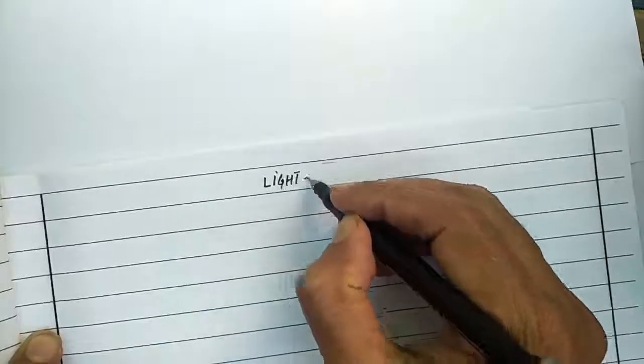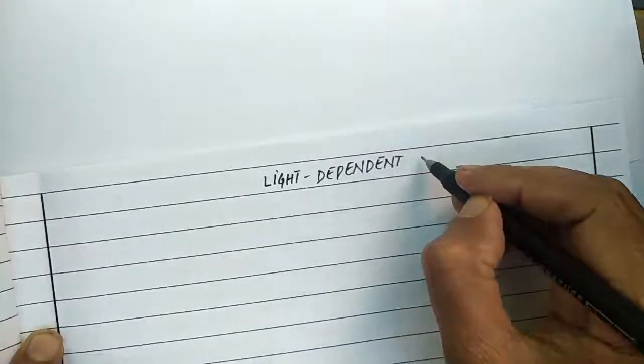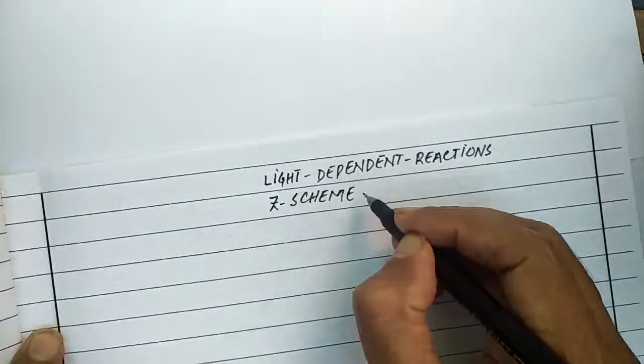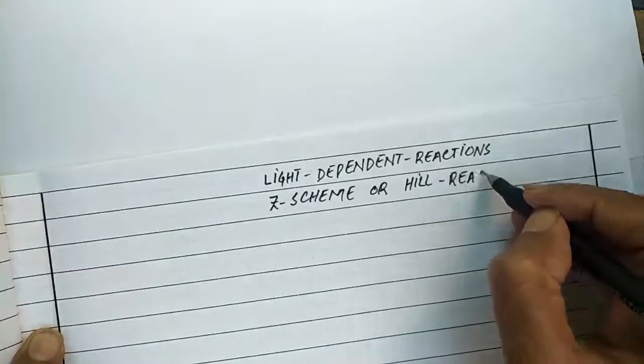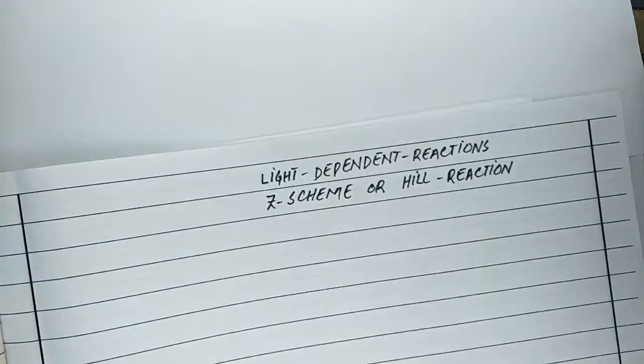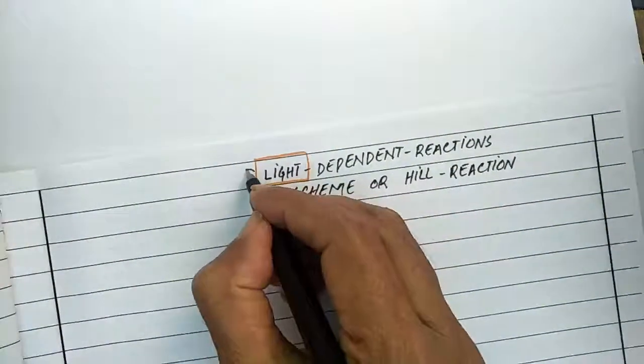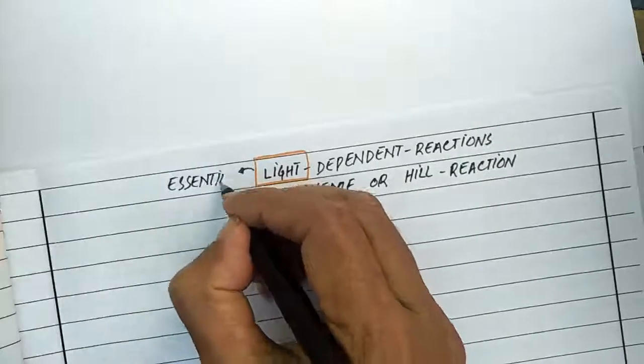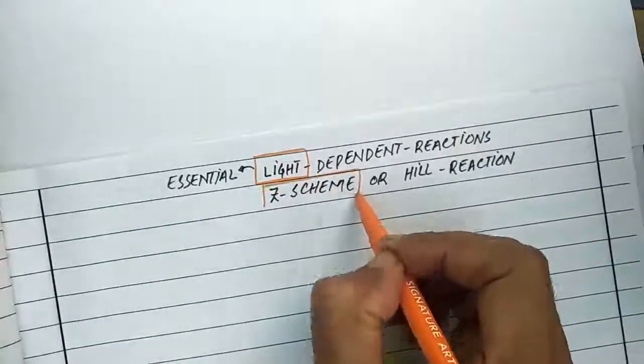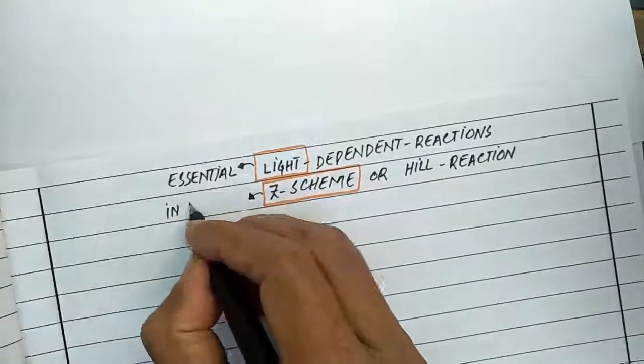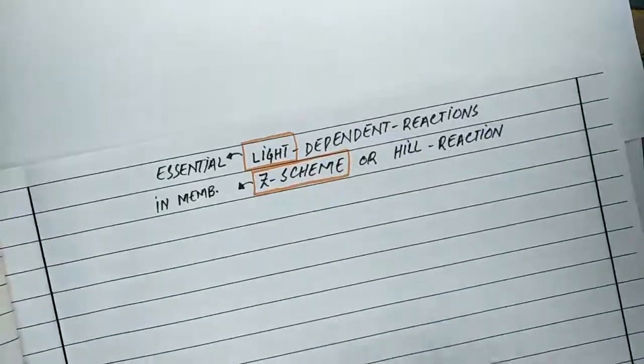Now we discuss light-dependent reactions, also known as Z-scheme or Hill reaction. It is called light-dependent reaction because it takes place only in the presence of light. It's called Z-scheme due to the presence of electron carriers in Z-shape in the thylakoid membrane and Hill reaction